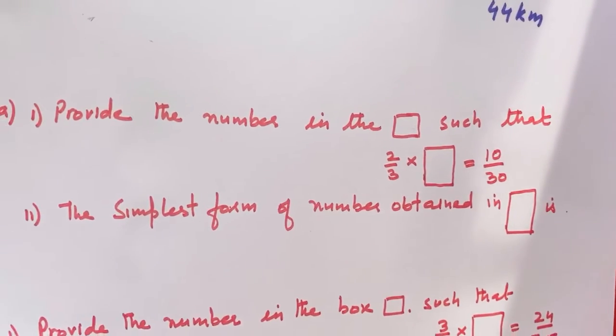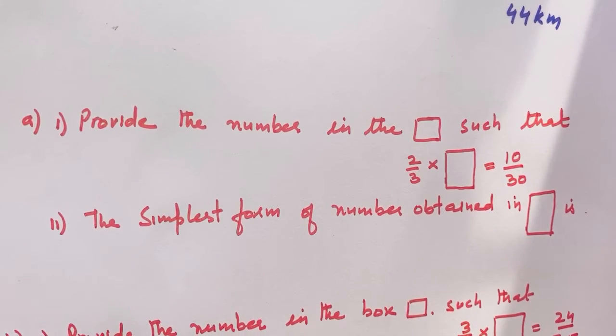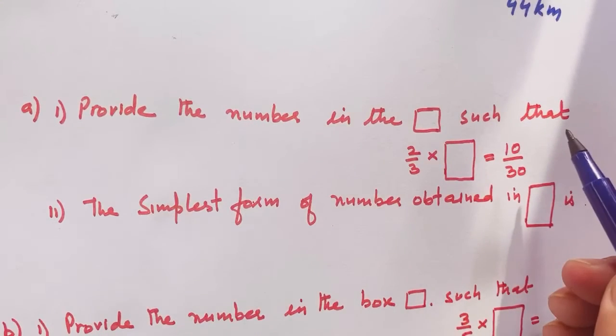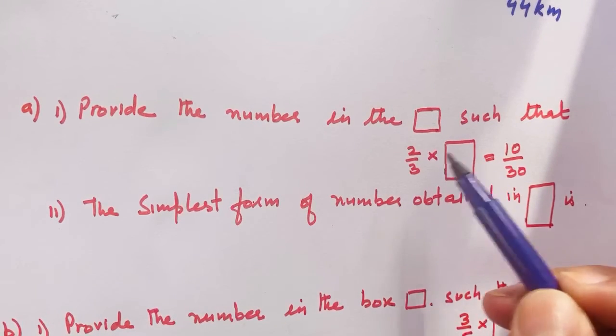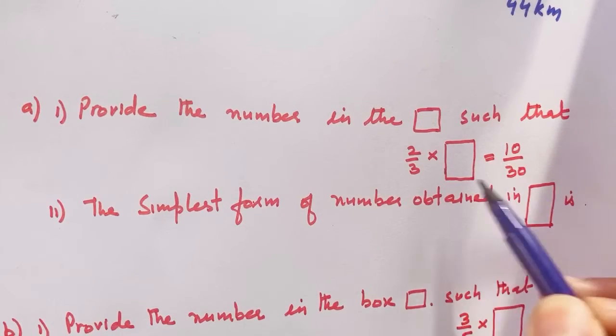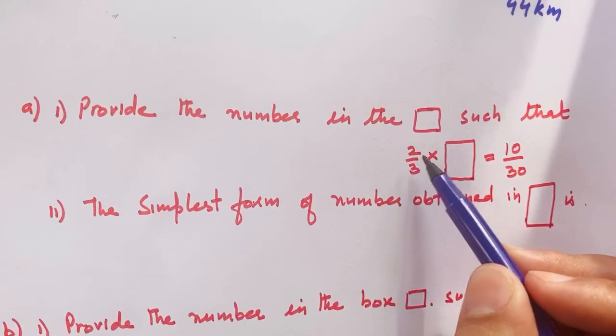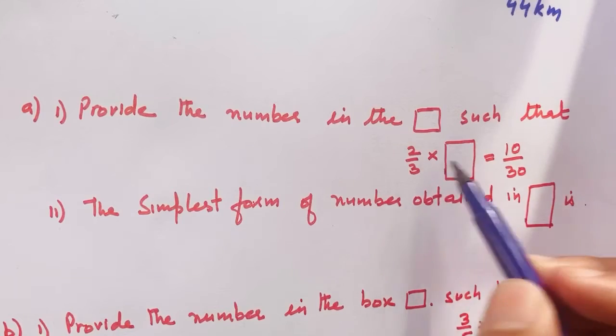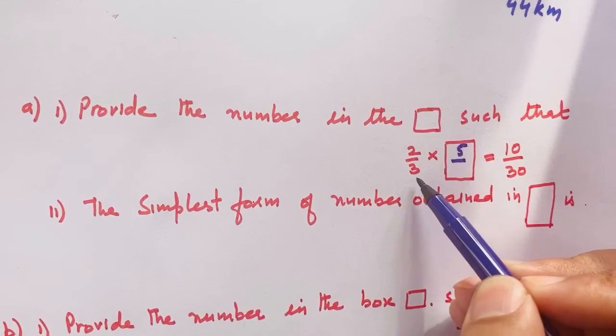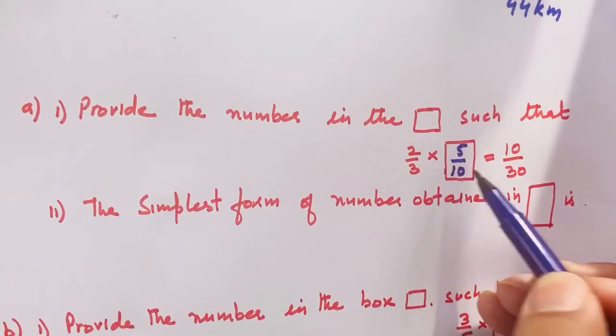Next question number 8. Provide the number in the box such that: 2 upon 3 into dash equals 10 upon 30. Numerator times numerator, denominator times denominator. What do you multiply with 2 to get 10? 5. 2 times 5 is 10. Denominator, what do you multiply with 3? 3 times 10 is 30.